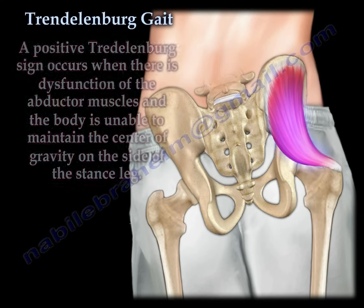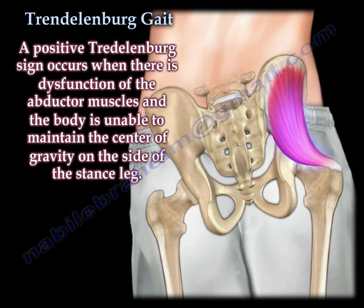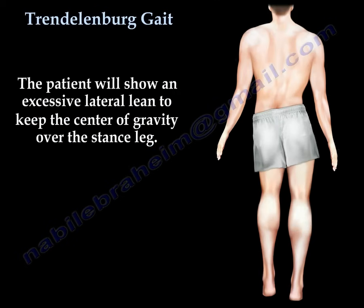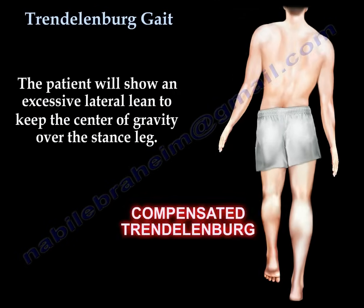A positive Trendelenburg sign occurs when there is dysfunction of the adductor muscles and the body is unable to maintain the center of gravity on the side of the stance leg. The patient will show an excessive lateral lean to keep the center of gravity over the stance leg.